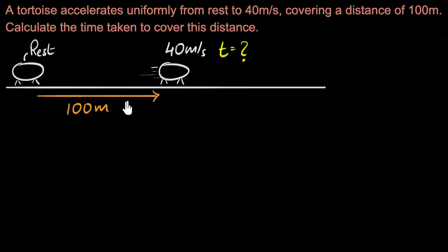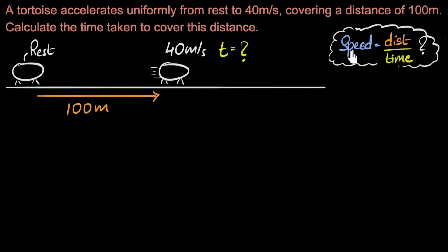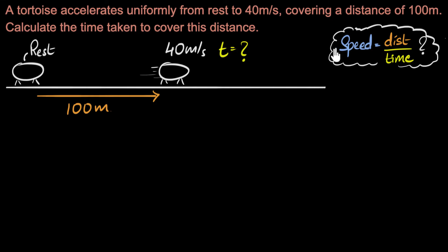Whenever I see questions like these, the first thing that comes to mind is speed equals distance over time. It's tempting to use this because we're given the speed, the distance, and we need time. But we can't use this equation because it only works when speed is constant. In our example, the tortoise starts from rest — initial speed is zero — then accelerates, with speed increasing until it hits 40 meters per second. Since speed is continuously changing, you can't put any single number in. If you put 40, you'd be assuming that speed was 40 throughout the entire motion, which would be a mistake. And that's why we cannot use this equation in accelerated motion.